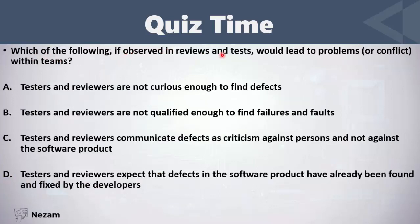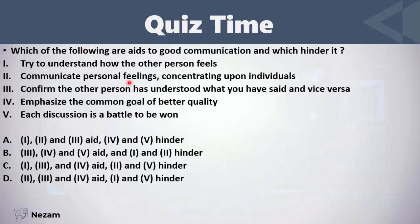Which of the following, if observed in reviews and tests, would lead to problems or conflict within teams? Testers and reviewers are not curious enough to find defects. Testers and reviewers are not qualified enough to find failures and faults. Testers and reviewers communicate defects as criticism against persons and not against the software product. Testers and reviewers expect that defects have already been found and fixed by developers. The answer is that communicating defects as criticism against persons will lead to conflict within the team.